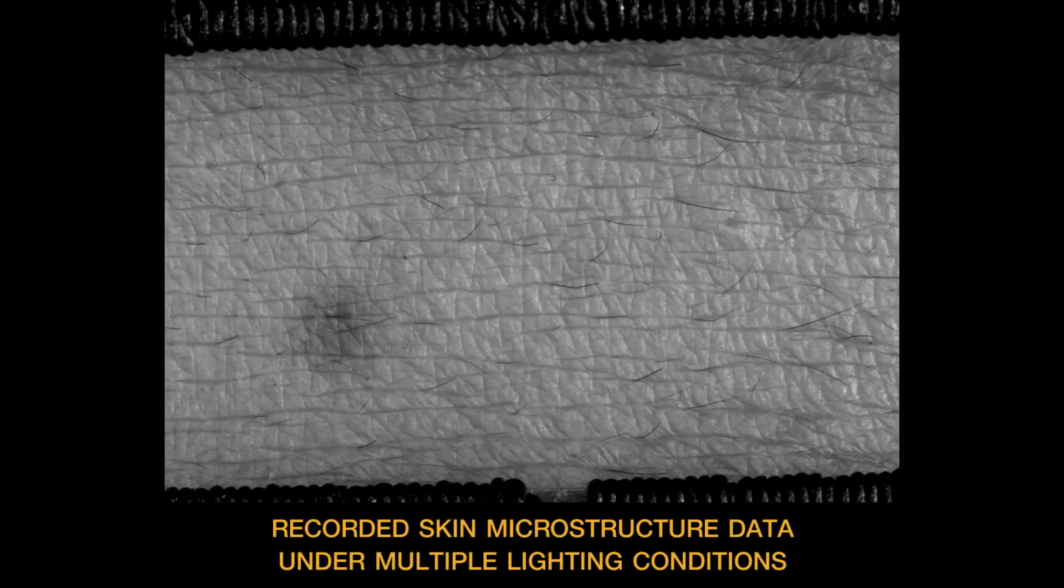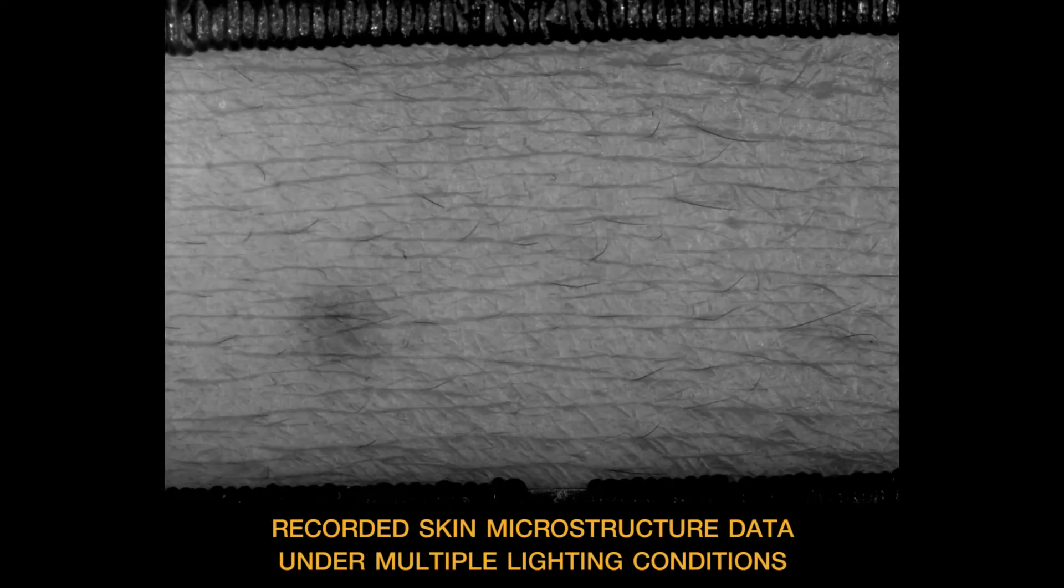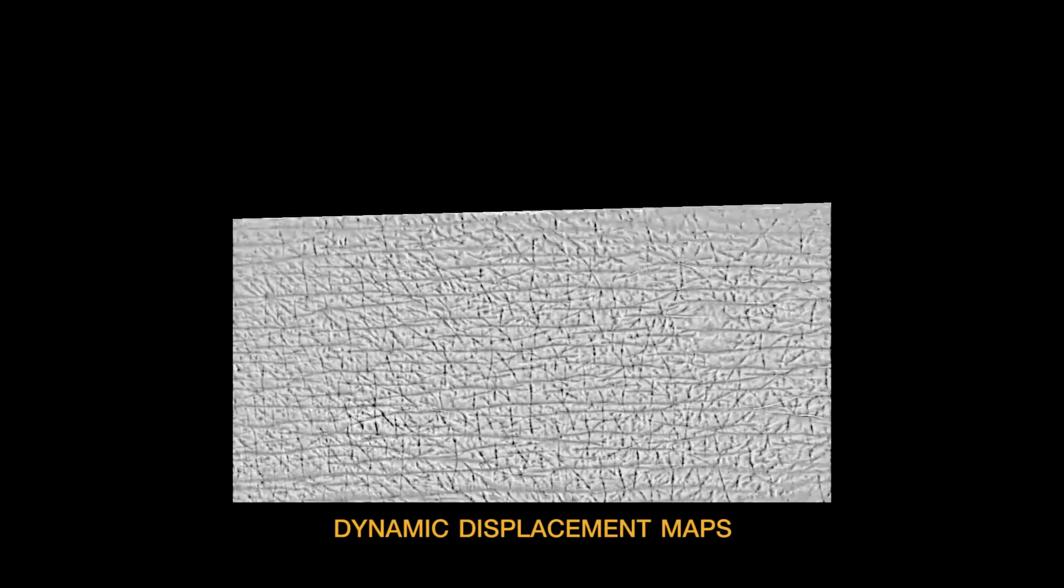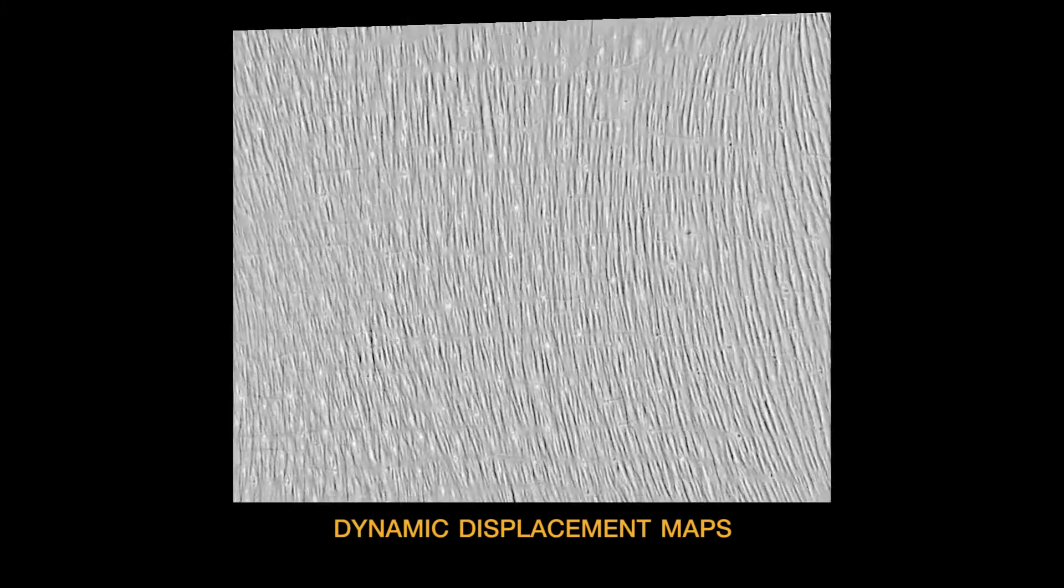Each scan performed in under half a second records the skin surface shape at 10 micron resolution. From the normal maps derived from the lighting conditions, we integrate a displacement map for each amount of deformation.